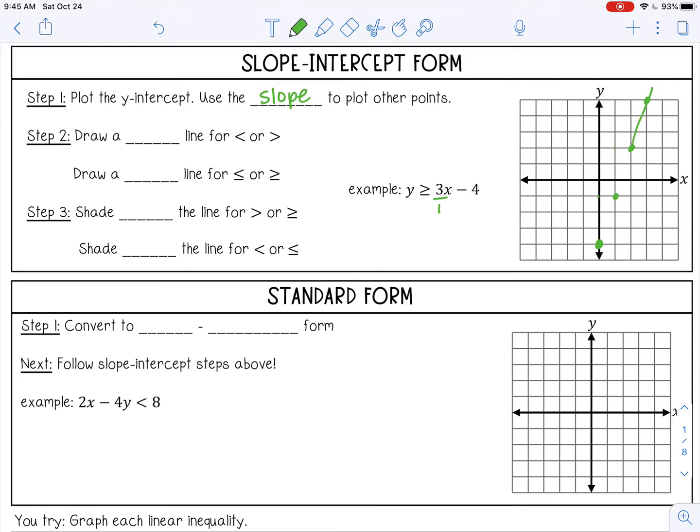Then I'm going to connect these points with a line. For inequalities, there are two types of lines. You can have a dashed line for less than or greater than, or you can have a solid line for less than or equal to and greater than or equal to, which is what we have in this problem.